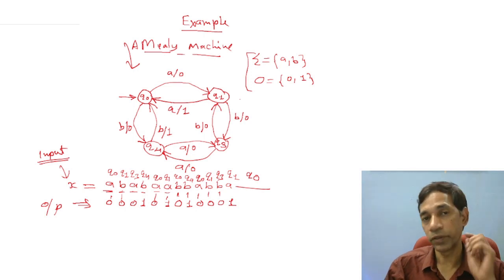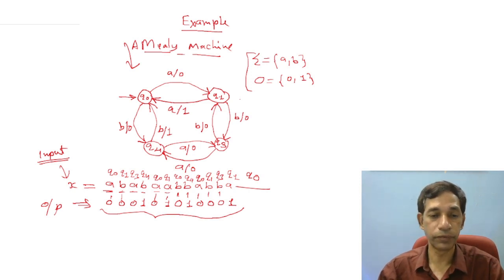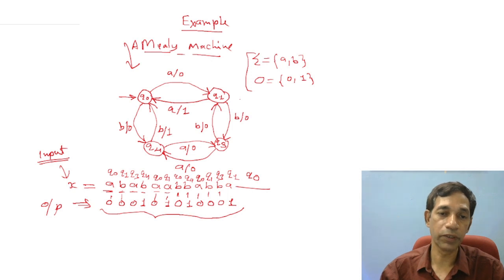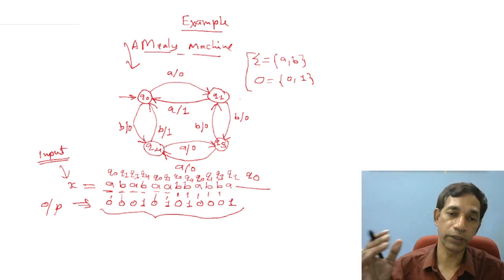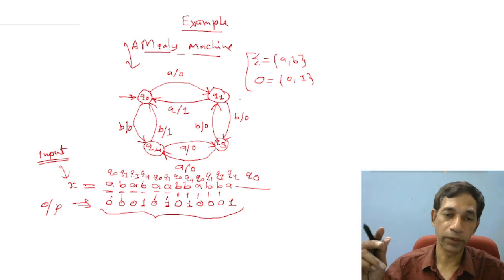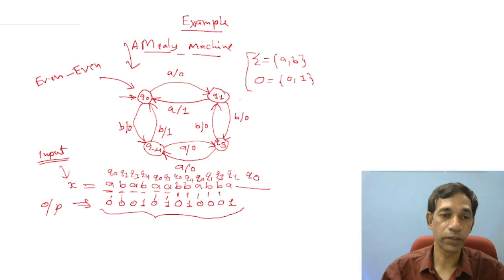Once your input is exhausted, your machine stops and you can read the output. The output produced shows zeros and ones — the machine produces 1 when it comes back to the initial state. It reaches the initial state when the number of a's and number of b's encountered are both even.